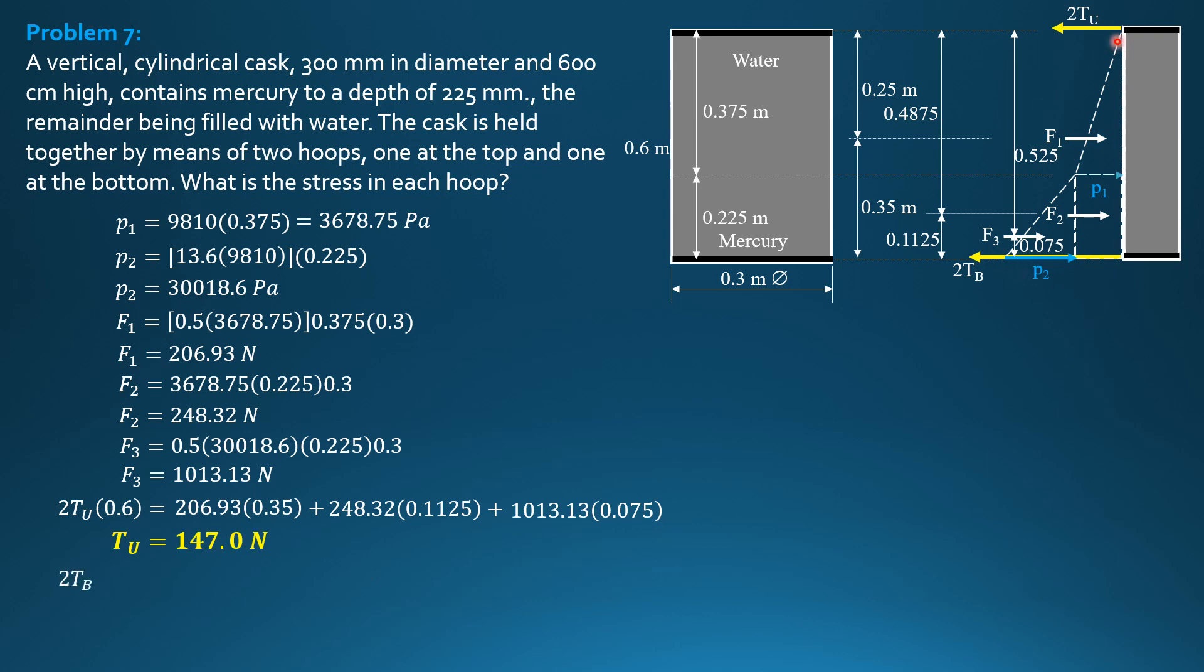Then summation moment about the top, upper hoop equals 0. 2 times tension in the bottom hoop times 0.6 equals F1, 206.93 times 0.25. Plus F2, 248.32 times 0.4875.